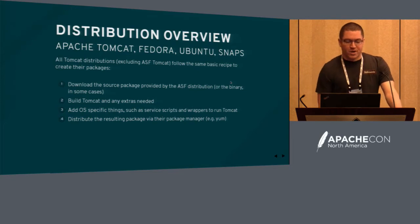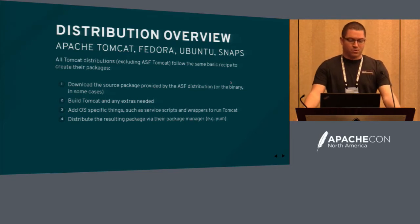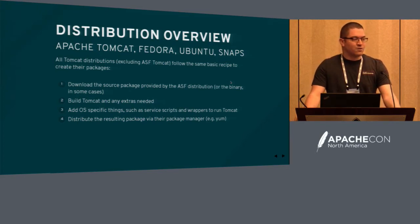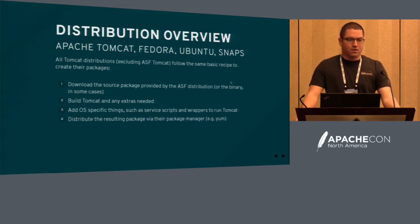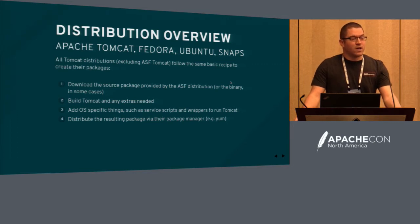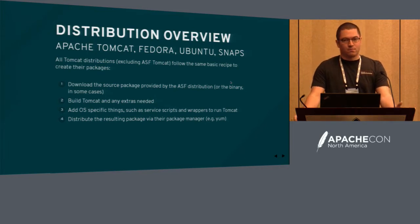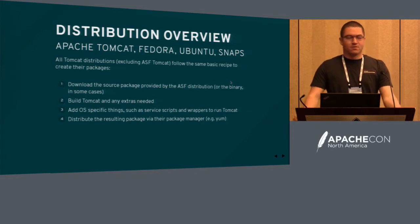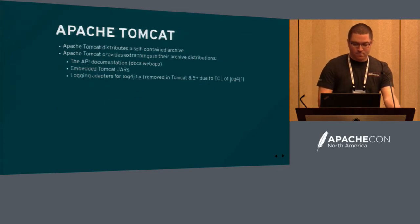All distributions that repackage Tomcat go through four basic steps: they download the sources and build Tomcat and any extras needed. We don't distribute the Catalina WS jar, so we don't provide the web services implementation. Then they add any OS-specific stuff, like service scripts — for RHEL there's systemd, for Ubuntu there's systemd scripts. For RHEL there are also a couple of configuration files that give you the equivalent feature set you'd get from setenv. Then they distribute the package with a package manager, like yum.